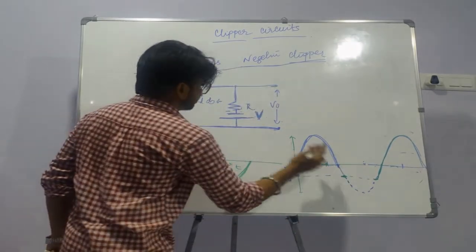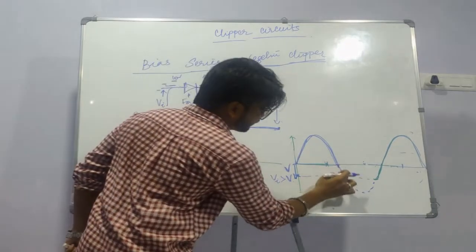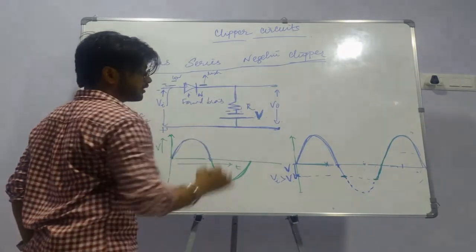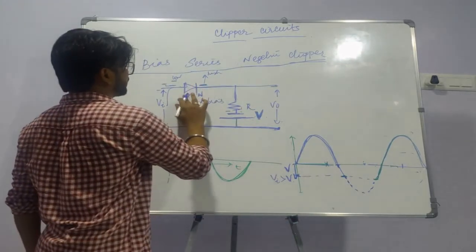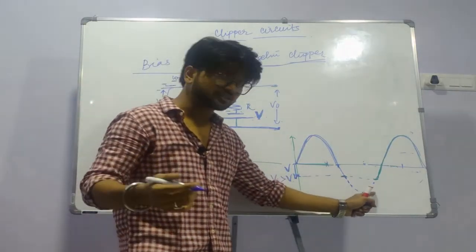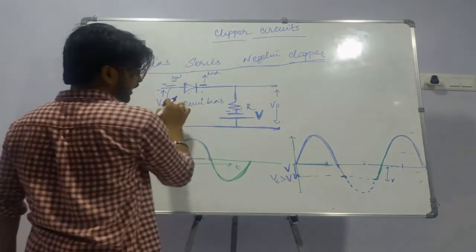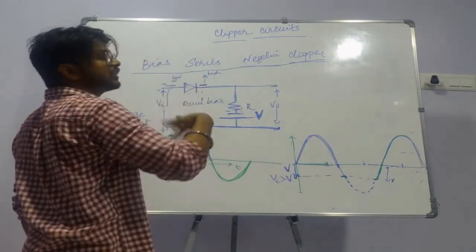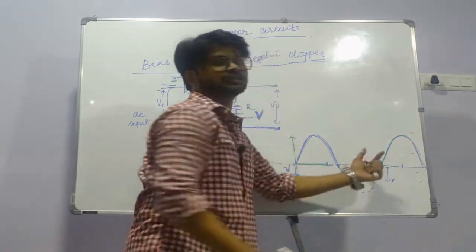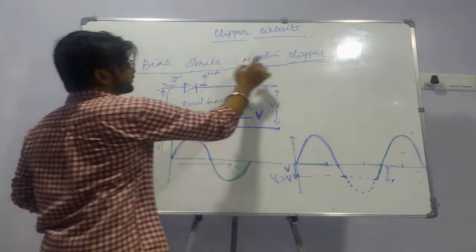Till the voltage V value, it remains in forward biased condition. After that value, the diode becomes reverse biased and conduction stops until Vi again reaches the value V, where Vi's negative becomes greater than the negative of V, and it starts conducting again. This oscillation repeats as the input grows. This is the explanation of the bias series negative clipper.